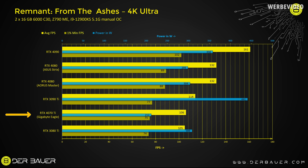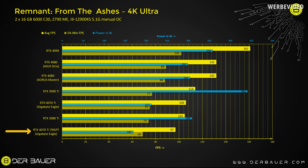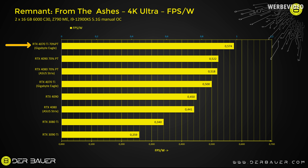In Remnant from the Ashes, again at 4K, the RTX 4070 Ti is on par with the 3080 Ti, while consuming 30% less power. If we lower the power target to 70%, we lose about 10% performance but decrease power to only about 170 Watts, which is a very enjoyable range. In the FPS per Watt chart, the RTX 4070 Ti at 70% power target sits on top, beating even the 4090 and 4080 also running at 70%. Compared to a 3080 Ti or 3090 Ti, the 4070 Ti is twice as efficient.